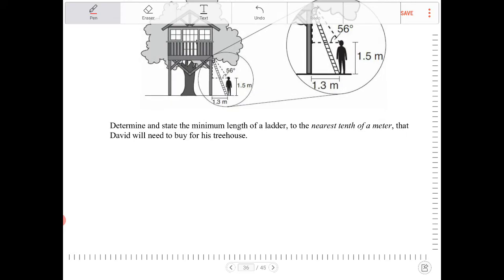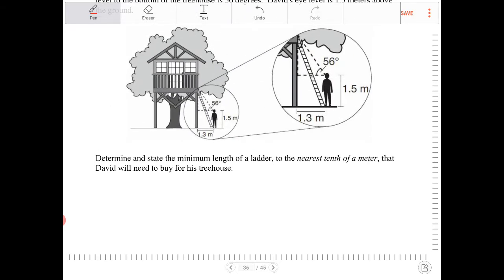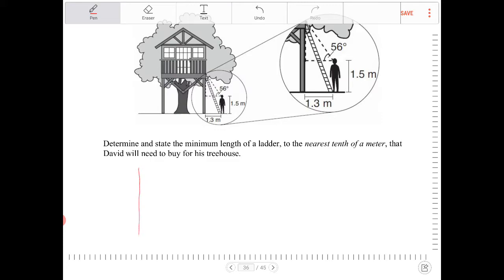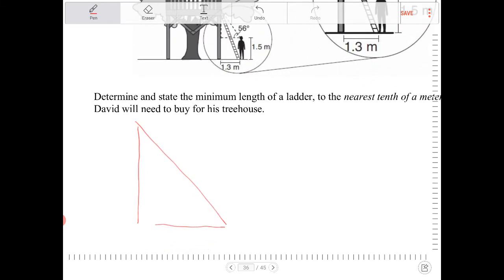Determine and state the minimum length of the ladder to the nearest tenth of the meter. So I'm just going to redraw this diagram that's in the zoomed in position there. So this is the situation that I have.